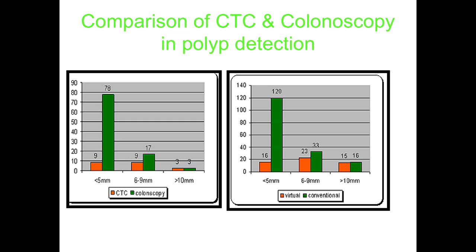Here's a comparison of CT colonoscopy and optical colonoscopy in polyp detection. The orange is CT colonoscopy and the green is optical standard colonoscopy. For smaller polyps less than 5mm, optical colonoscopy is clearly better. But when it comes to 6 to 9mm or greater than 10mm — the significant polyps — CT colonoscopy is not far behind optical colonoscopy. Smaller polyps are often incidental and probably never going to amount to anything, so for picking up significant pathology, virtual colonoscopy looks pretty much equivalent.